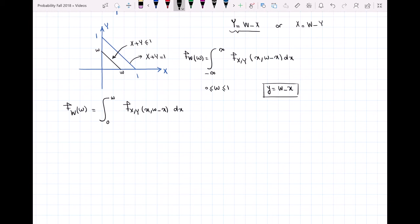This region is supposed to be inside this triangle, and this line here is Y equal to W minus X. So my X is always changing between 0 and W.